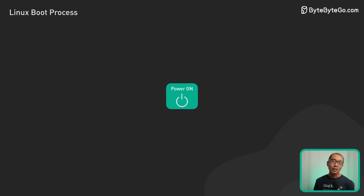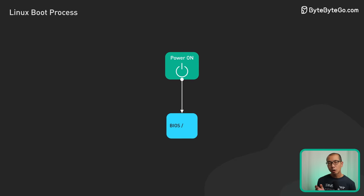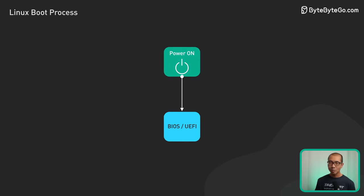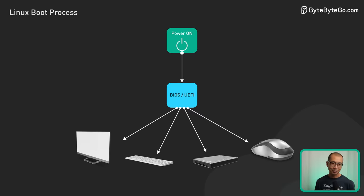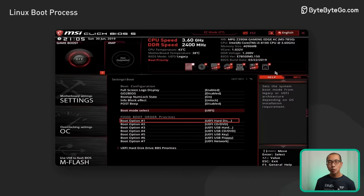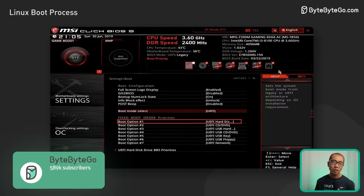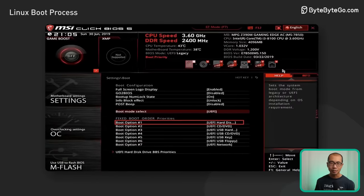The process starts when you press that power button to turn on your computer. First, a program called a BIOS or UEFI boots up. These are basically pieces of software that get all the main parts of your computer ready for action — the keyboard, screen, hard drives, and so on. UEFI is the newer option, offering faster boot times and better security features like Secure Boot compared to traditional BIOS.